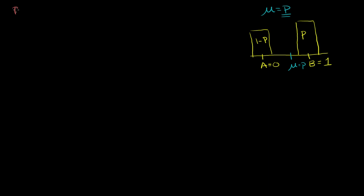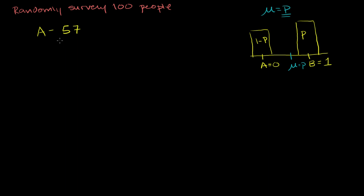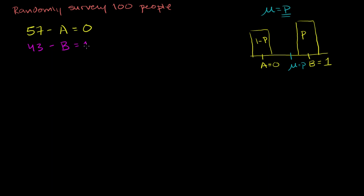So I'm going to randomly survey 100 people. And let's say I got the following results: 57 people say they're going to vote for A — that's equivalent to getting 57 samples of 0. And then the rest of the people — once again, very decisive population, no one is undecided — so 43 people say they're going to vote for B, or that's the equivalent of sampling 43 ones.